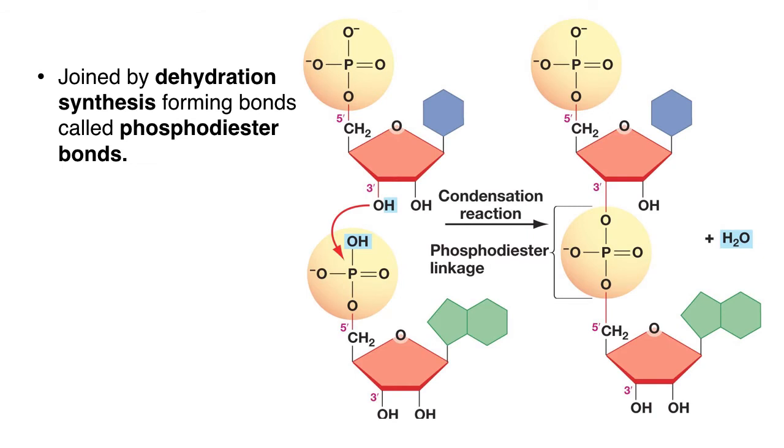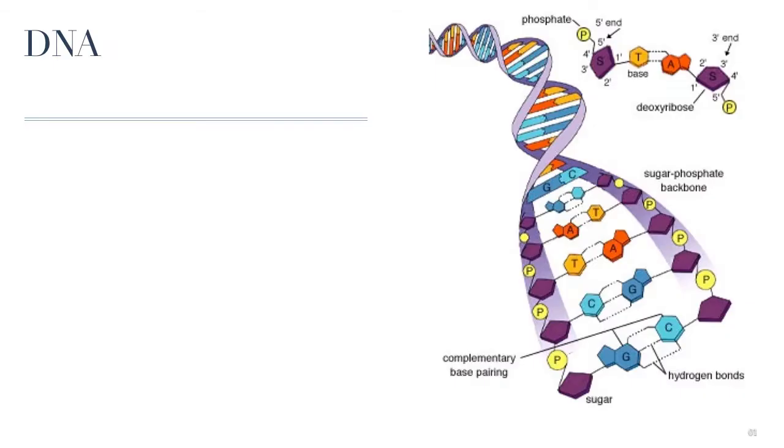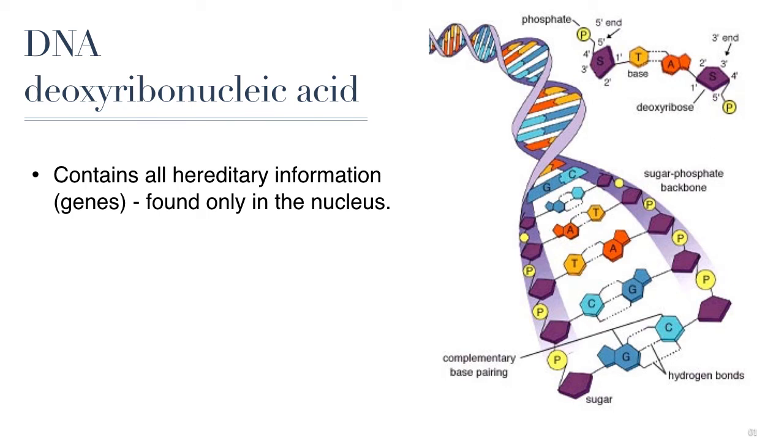Nucleotides can be joined by dehydration synthesis reactions and they form bonds called phosphodiester bonds. The resulting molecules are the polynucleotides DNA and RNA. DNA is the acronym for deoxyribonucleic acid because it is a nucleic acid and contains a deoxyribose sugar as its sugar in its nucleotide. This molecule contains the code that allows cells to produce all the proteins in living organisms.